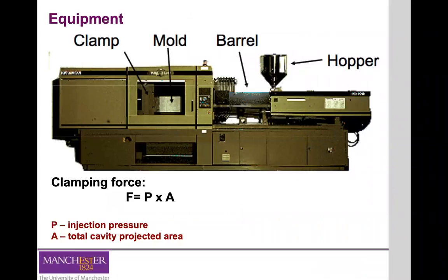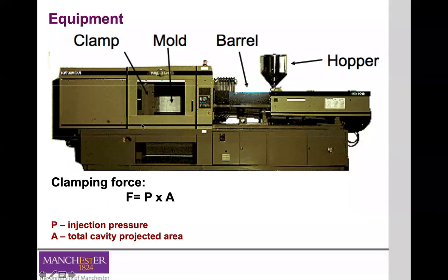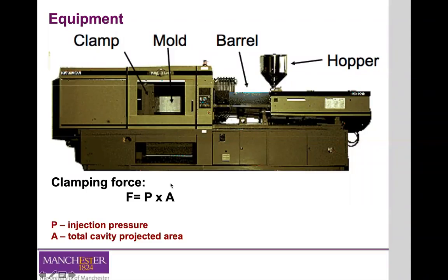The size of the machine is normally defined by the dimensions of the part you are trying to inject. The larger the part, the larger the force required to close the mold, and therefore the larger the clamping force needed — and as a consequence, the bigger the machine and the higher the cost. The clamping force is simply defined by the injection pressure multiplied by the total cavity projected area of your mold.